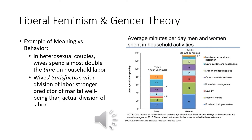Here's an example of how meaning and behavior can differ and how feminism attends to both. In heterosexual couples, wives on average spend more time than husbands on household labor and childcare, though that gap is narrowing. What matters more than actual hours for relationship satisfaction is wives' perceptions of fairness — not how equal it is in time, but whether she believes it's fair. That perception may be based on what she witnessed growing up, comparisons to friends, or previous relationships.